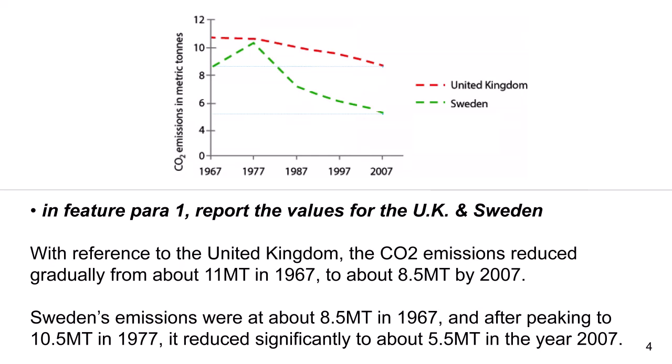Now in feature para 1, report the values for UK and Sweden. With reference to the United Kingdom, the CO2 emissions reduced gradually from 11 metric tons in 1967 to about 8.5 metric tons by 2007. Sweden's emissions were about 8.5 metric tons in 1967, and after peaking to 10.5 metric tons in 1977, it reduced significantly to about 5.5 metric tons in the year 2007.